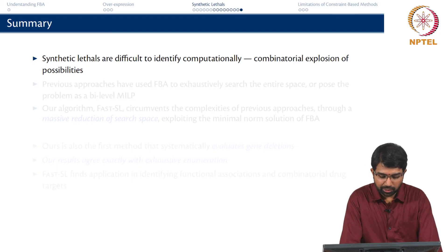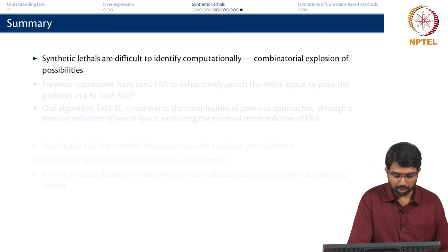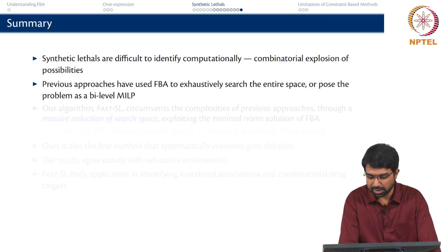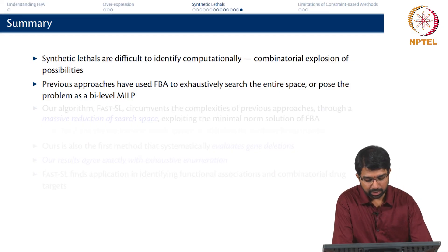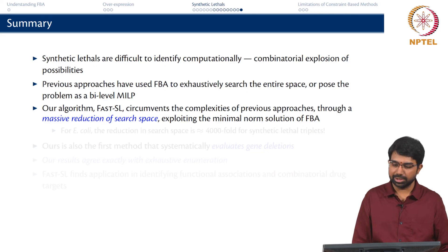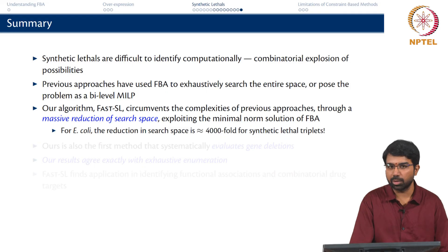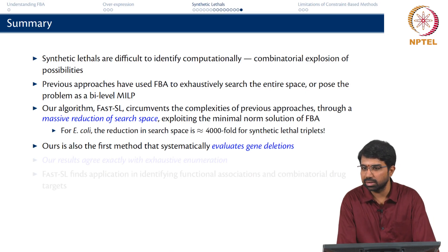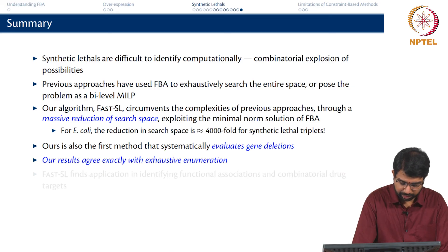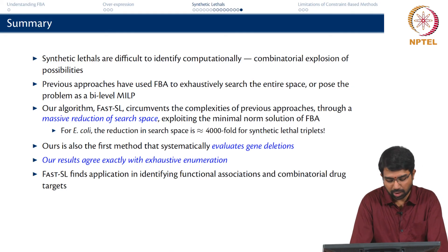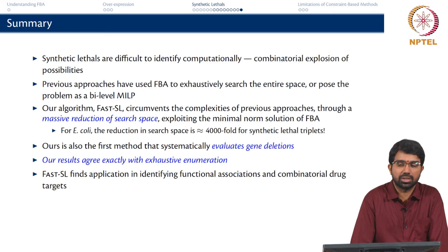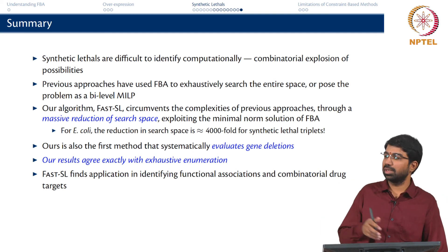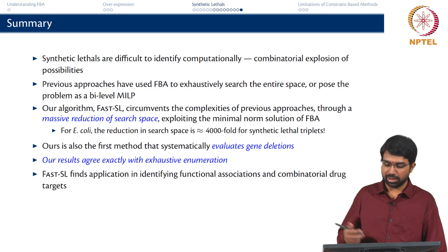Synthetic lethals are difficult to identify computationally because of the combinatorial explosion of possibilities. Previous approaches used FBA to exhaustively search the entire space, or posed it as a bi-level MILP. We avoid both the MILP formulation and exhaustive enumeration. Our approach is inspired by exhaustive enumeration but cuts down the search space, achieving about a 4000-fold improvement for synthetic lethal triplets. We also systematically evaluate gene deletions, which the previous studies had not done — this involves intelligent handling of GPR constraints. Applications include finding functional associations and combinatorial drug targets.